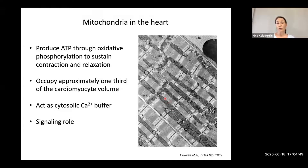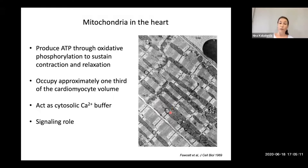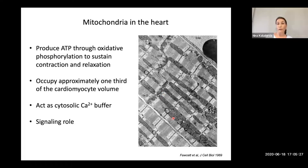In addition to being a major source of ATP, mitochondria can also act as cytosolic calcium buffers. It has been shown, especially in recent years, how mitochondria can participate in buffering and uptake of cytosolic calcium on a beat-to-beat basis. They also serve signaling roles — for instance, they interact with a number of organelles within the cell, including the ER and participation in the integrated stress response. They can also interact with organelles that are further apart by producing reactive oxygen species or other signaling molecules.